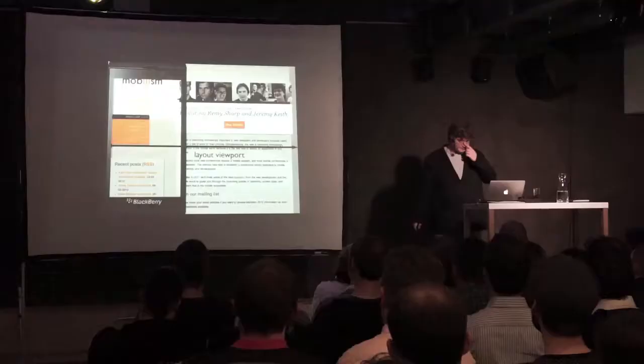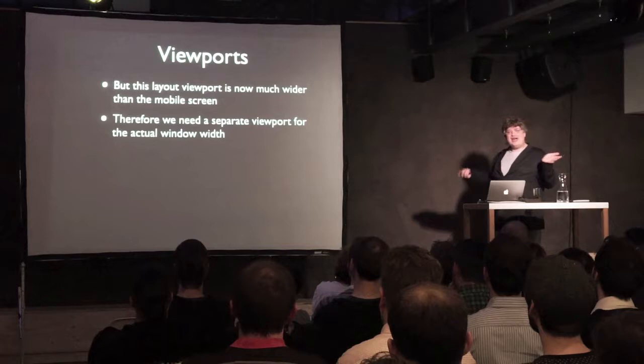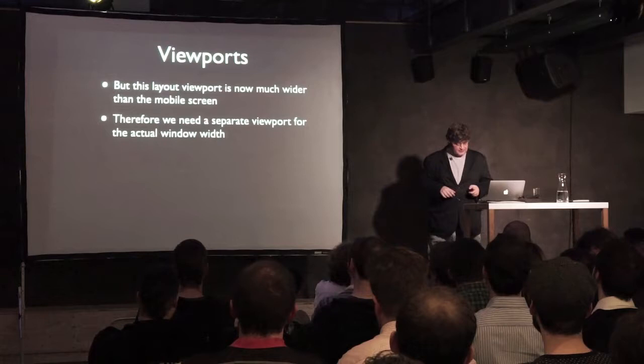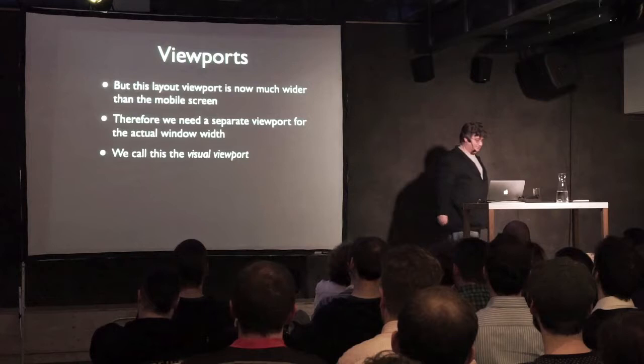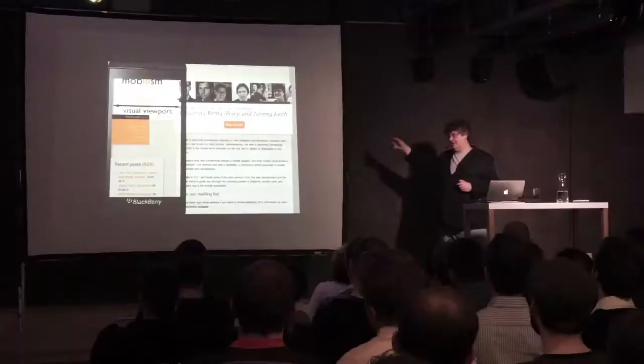Because the website is now way wider than the mobile screen, we need a second viewport to define what the user is actually seeing — because certain CSS declarations, especially position:fixed, depend on what the user currently sees. This leads to the visual viewport, the second of the three mobile viewports. It's basically just the width of the screen in CSS pixels. If you zoom in and make CSS pixels larger, fewer fit on the screen, and the visual viewport becomes smaller — just like on desktop.